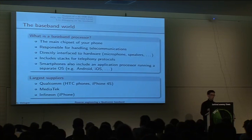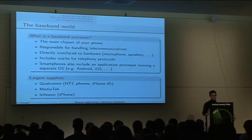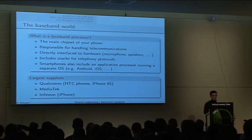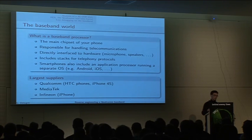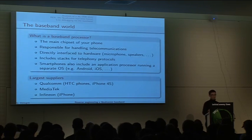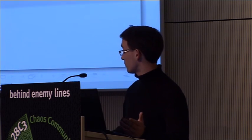It interfaces to hardware and handles the protocol stacks for the telephony protocols. Most of the time, a lot of people have a smartphone capable of running a separate operating system like Windows Mobile, Android, iOS, etc. But the baseband operating system is always hidden — you don't directly interact with it. The biggest suppliers of baseband chips, the leader I think, is Qualcomm, followed by Mediatek and Infineon. I'll just mention a few phones like HTC and iPhone, but they share the market across various models.